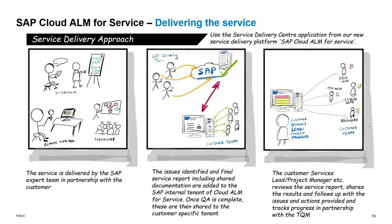Moving on to the service delivery approach. When the service has started and the team is working in collaboration with our customers, all the issues and actions identified during a service — when the meeting is being set, the agenda is being shared, or even during the wrap-up and delivering the final report — everything can be accessed from the service delivery platform. These documents and information will be shared by our SAP colleagues. Once the quality assurance is complete, these are shared to the customer-specific tenant. Then the customer service leader and project manager can review these service reports, share the results, and follow up with any issues and actions that are pending. Basically, you can track the progress here in partnership with the TQM.